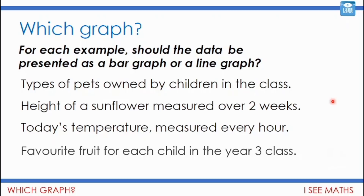Types of pets owned by children in the class would be a bar graph because we've got separate groups of different types of animals. The height of a sunflower over two weeks increases gradually, so we'd put that in a line graph. Today's temperature measured every hour might increase or decrease, so it's best to see the pattern in a line graph. Favourite fruit for each child in Year 3 would be a bar graph because we'd have different groups depending on which fruit was the favourite.